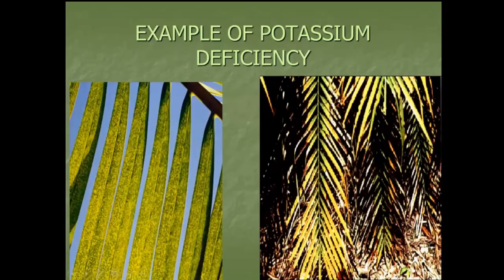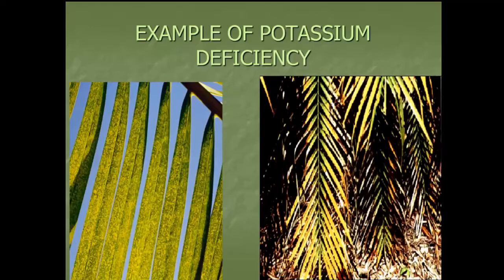Looking at photos, on the left-hand side you can see all those little yellow spots, a yellow kind of looking. On the right-hand side you can see how those fronds are looking necrotic — dying, looking dead. Those are the perfect signs of potassium deficiency.